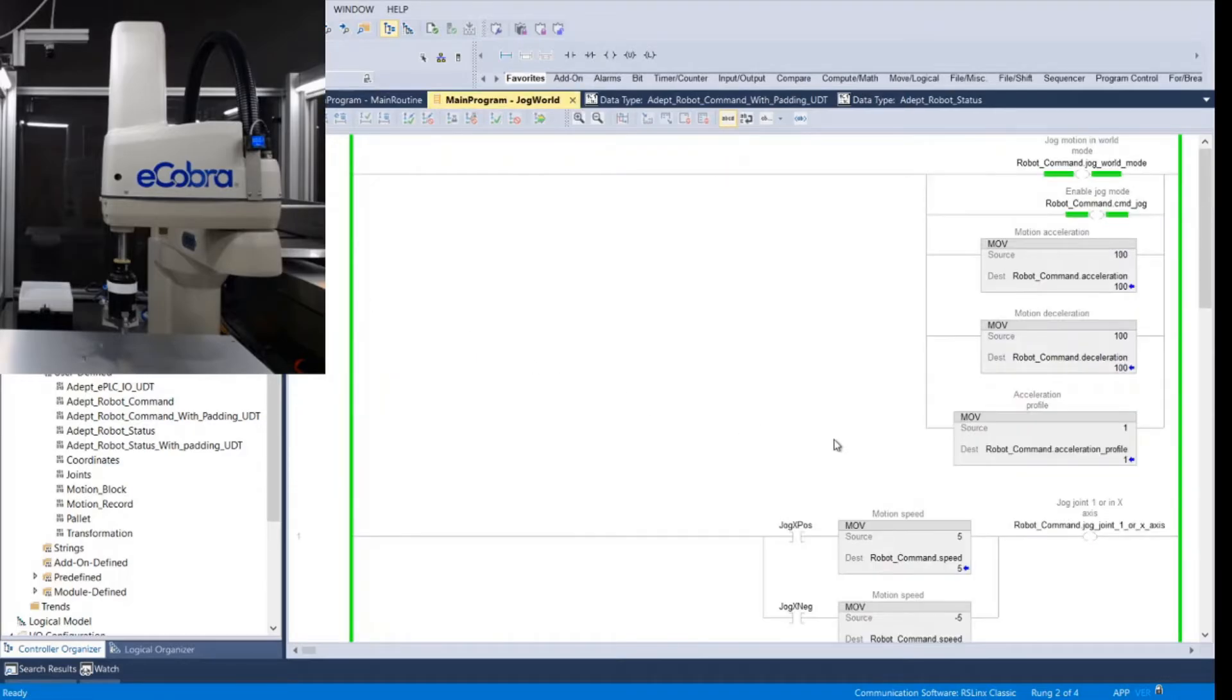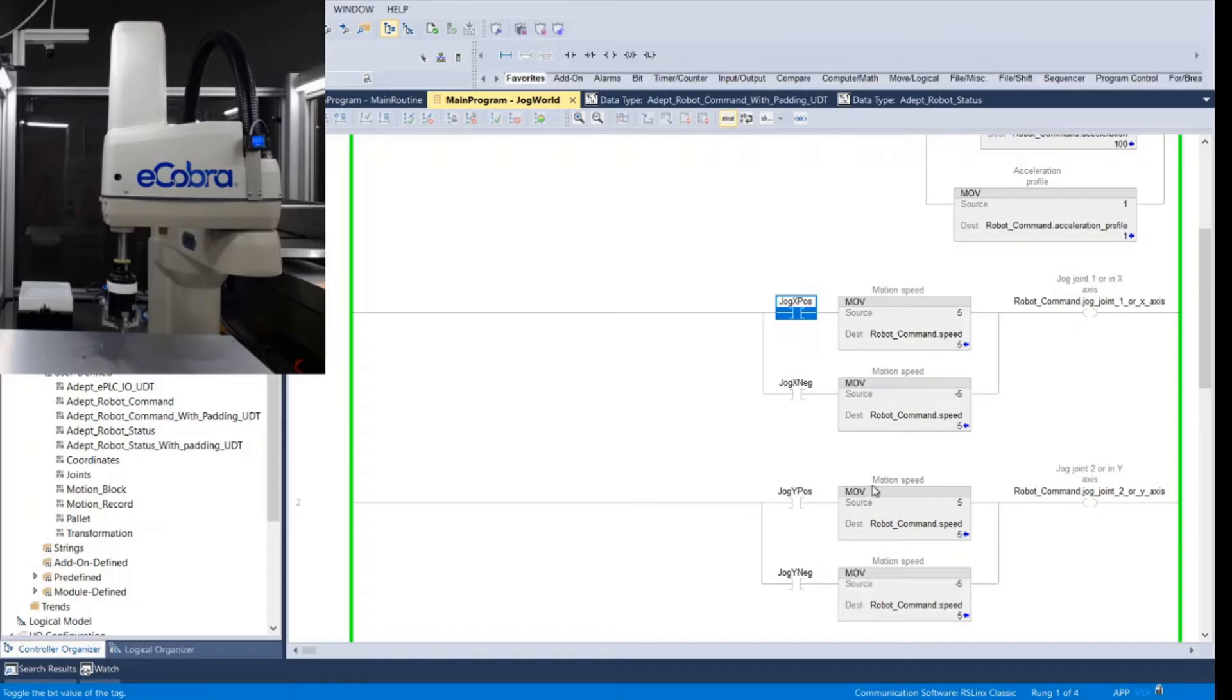Then you can get started creating a ladder logic program that can jog the robot, teach different positions, control inputs and outputs, and handshake with the rest of your machine.